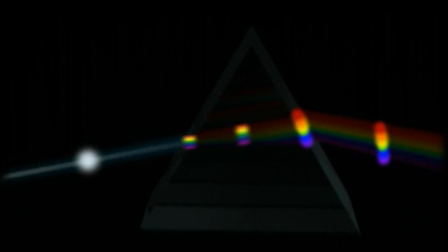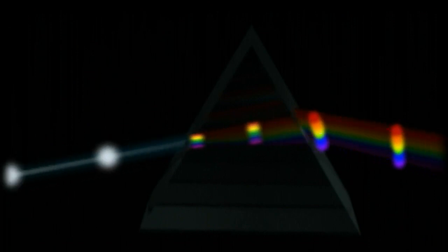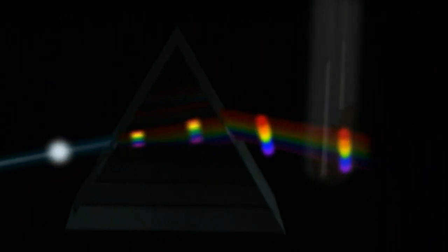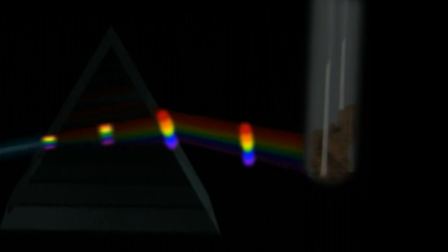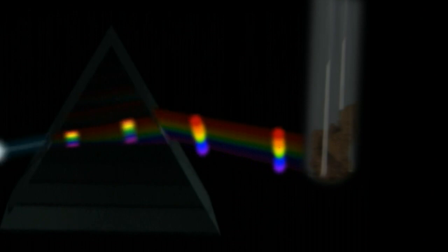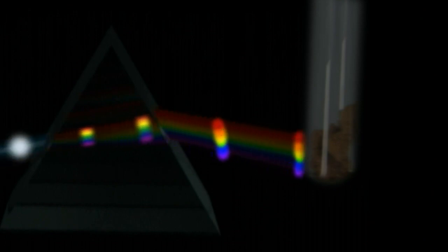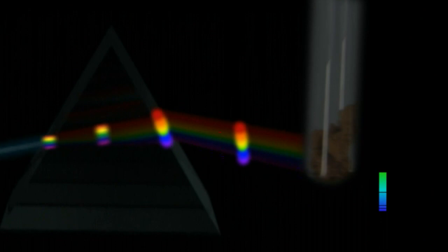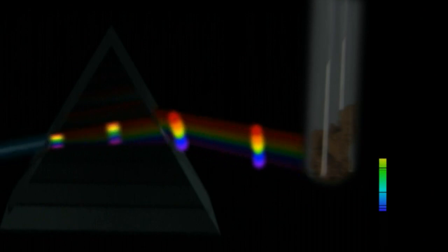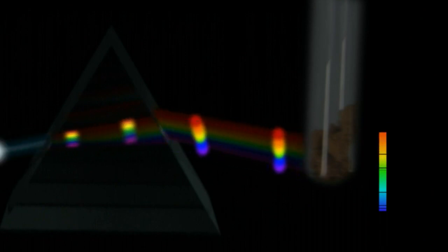Since white light contains all the colors in the spectrum, when we shine white light on a sample of an element under the right conditions, the atoms absorb all the photons that allow their electrons to jump to other energy shells. So, the absorption spectrum is all the colors in white light minus those that match the difference in energy shells within the atom.